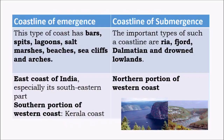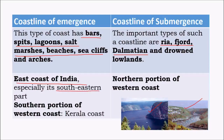The main landforms found along coastlines of emergence are bars, spits, lagoons, salt marshes, beaches, and sea cliffs. In coastlines of submergence there are other landforms, namely ria, fjord, and Dalmatian coastlines. Ria is a smaller version of a fjord. The coastline of emergence is mainly found on the east coast of India, especially near Tamil Nadu, and the southern parts of the western coastline such as the Kerala coast.